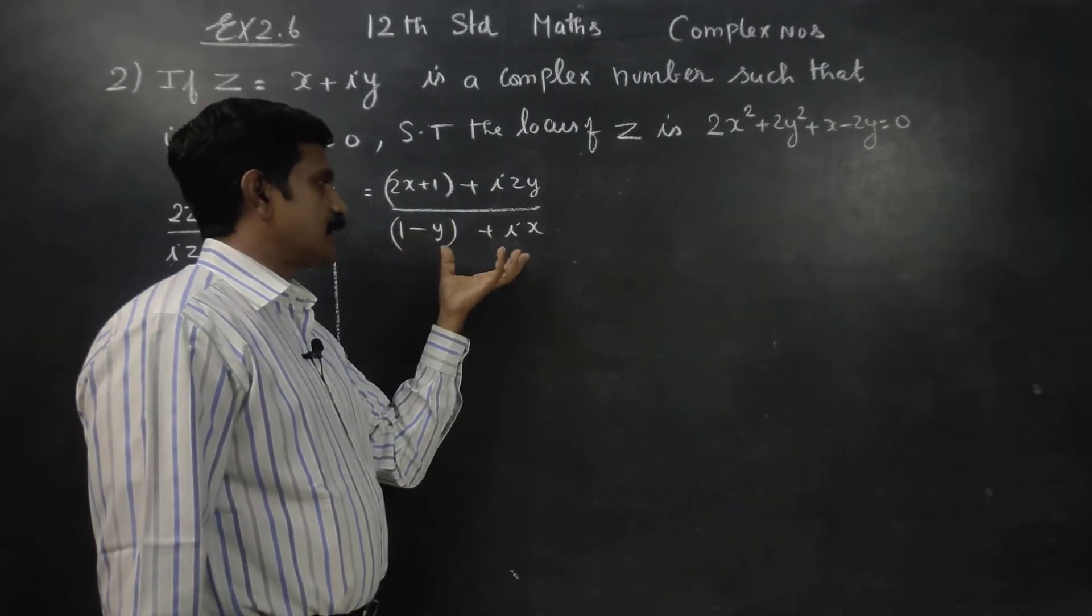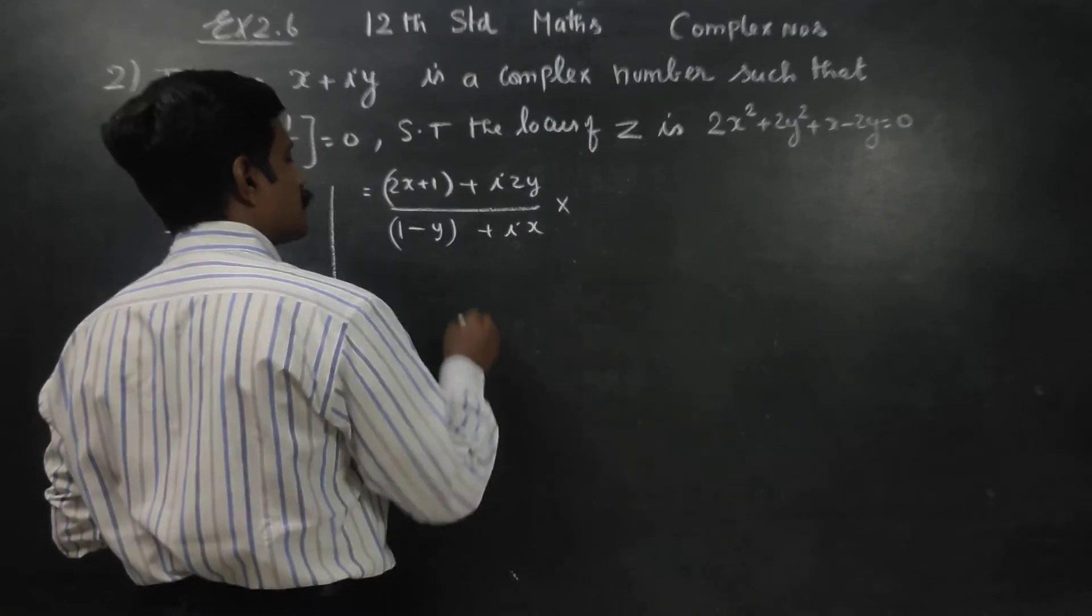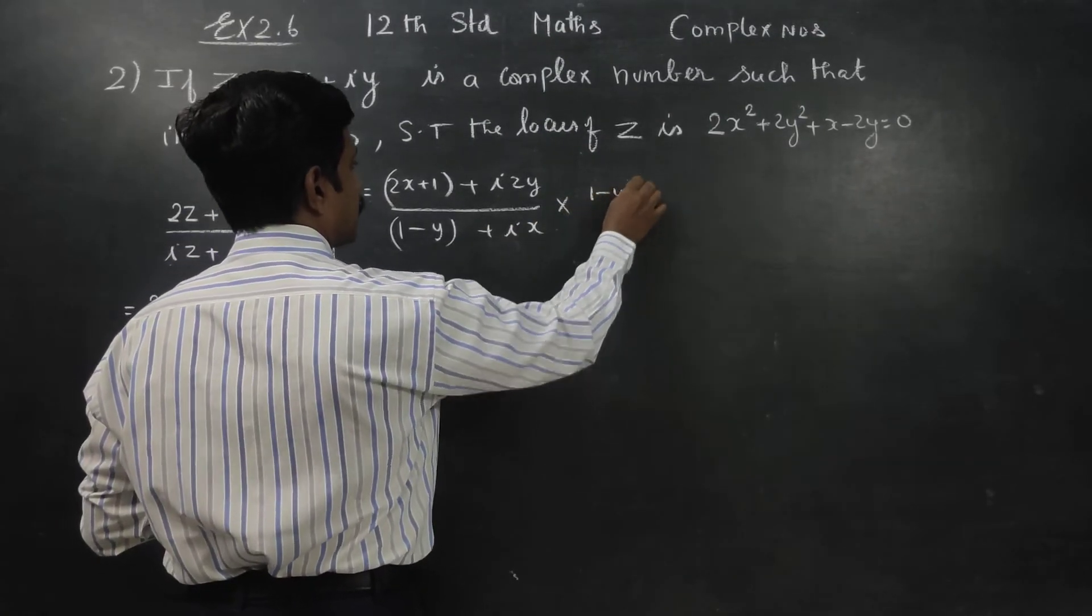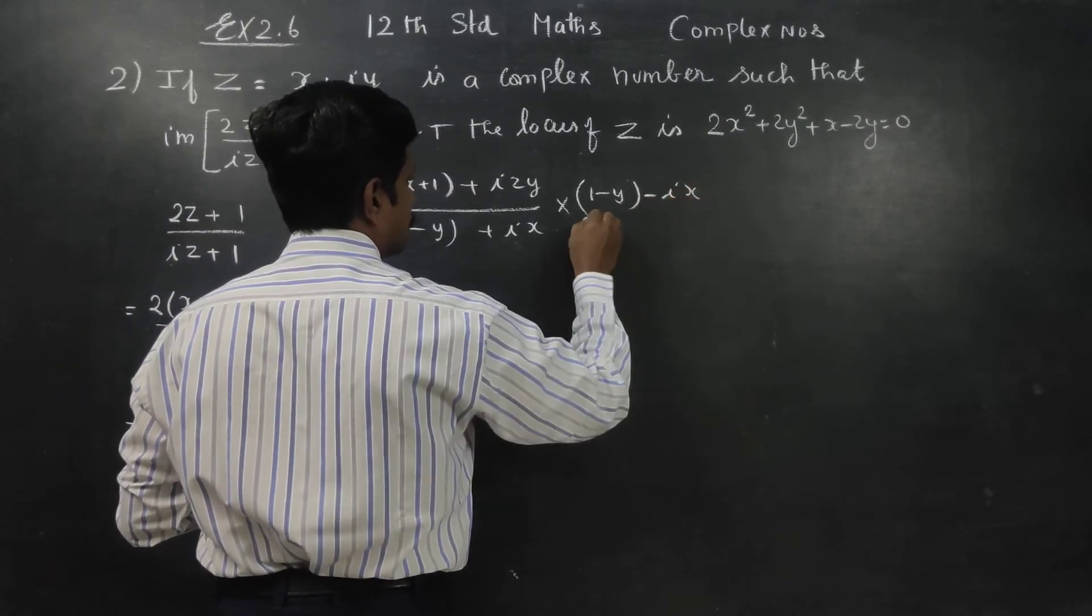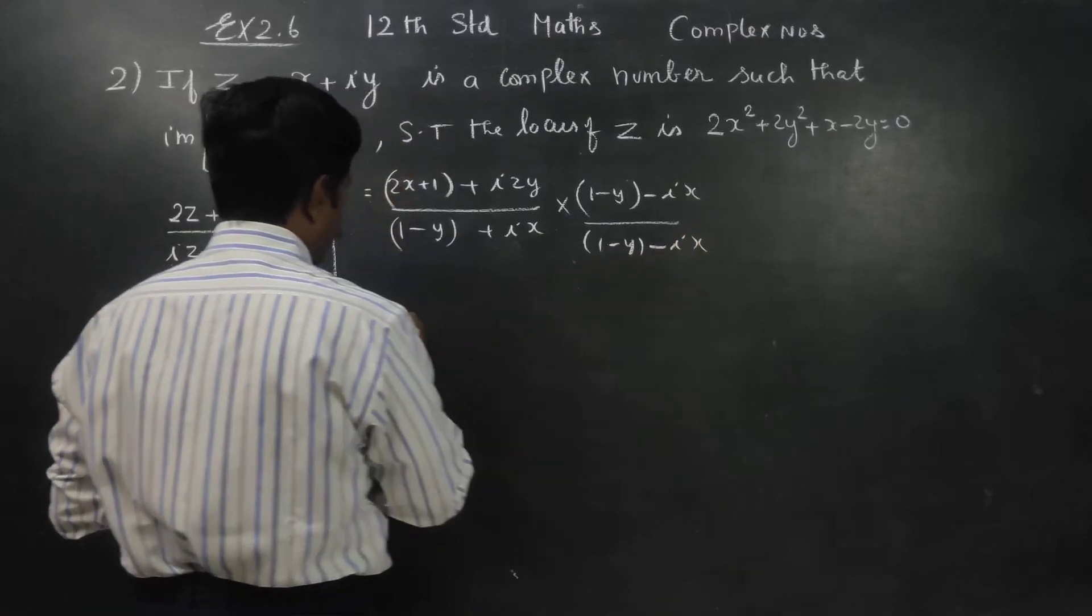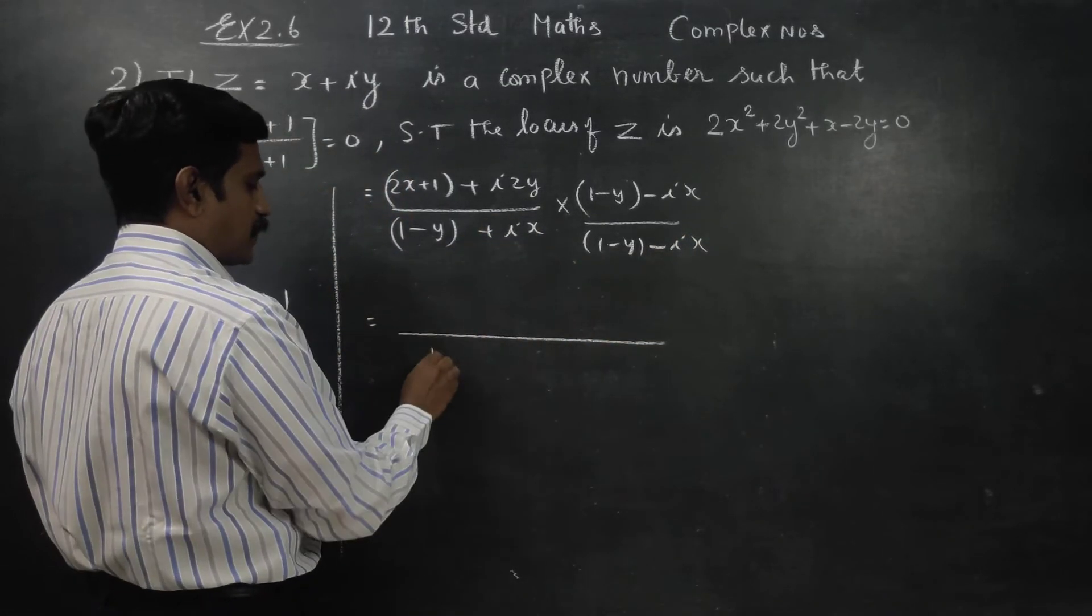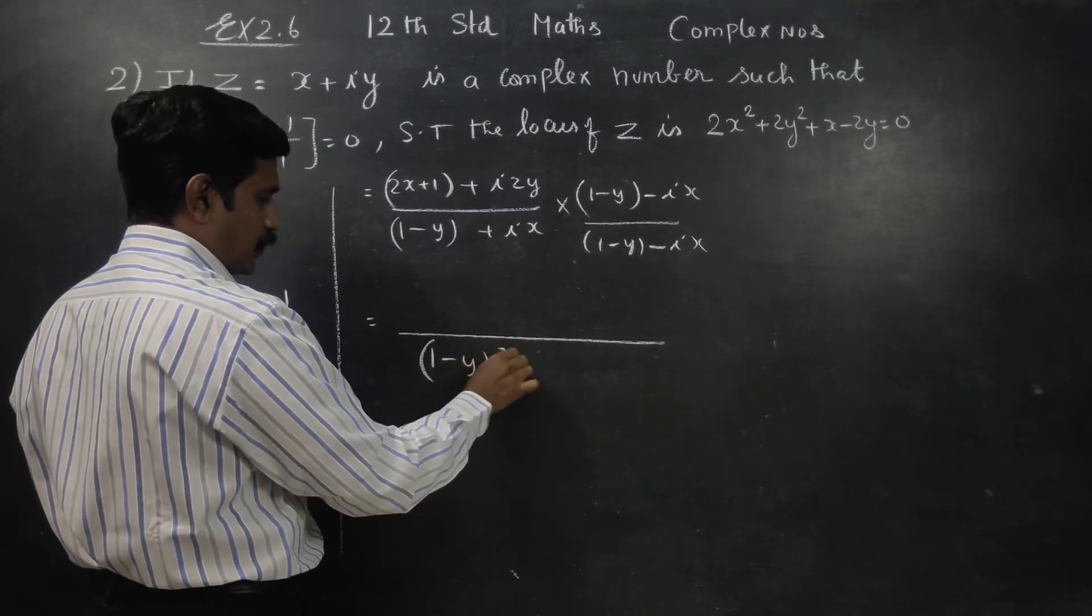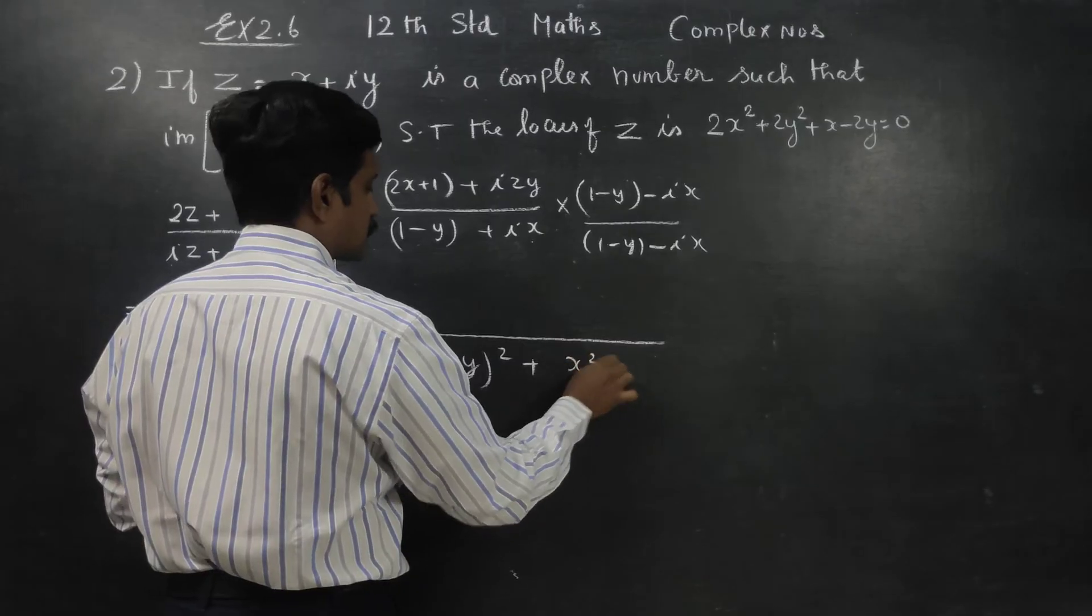I am going to multiply by the conjugate. Conjugate now 1 minus y plus ix will minus ix by 1 minus y minus ix. Conjugate gives a square plus b square. 1 minus y whole square plus b square. b square is x square.